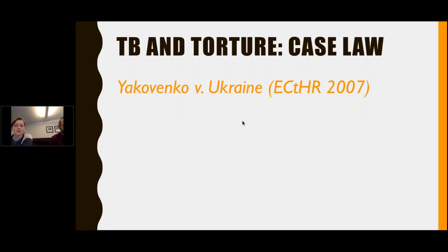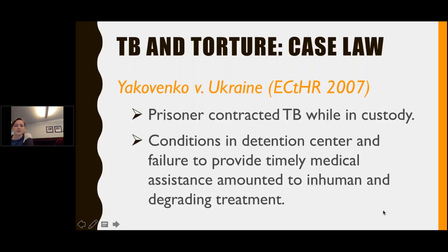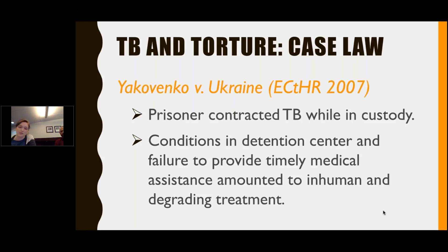In Yakovenko v. Ukraine, a prisoner contracted tuberculosis while in custody and alleged ill treatment, inhumane conditions, and a lack of medical care in a pretrial detention center. The court held that detention conditions — including overcrowding, sleep deprivation, lack of natural light and air — together with the authorities' failure to provide timely and appropriate medical assistance regarding his TB status, altogether amounted to a violation of Article III.